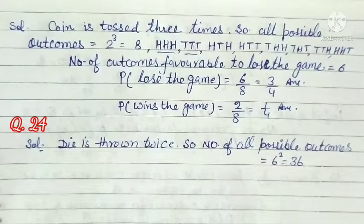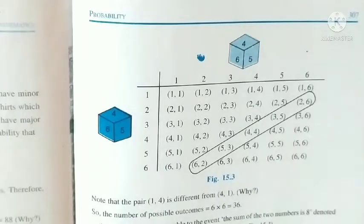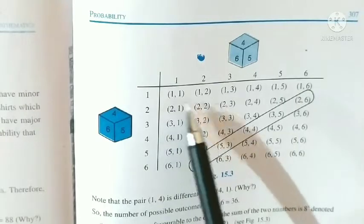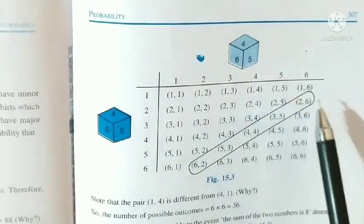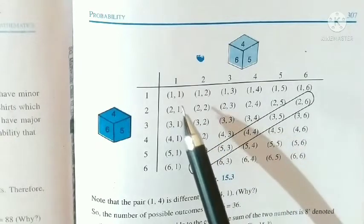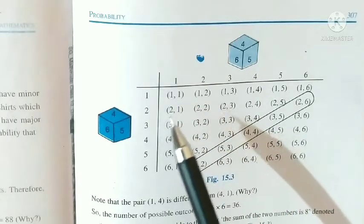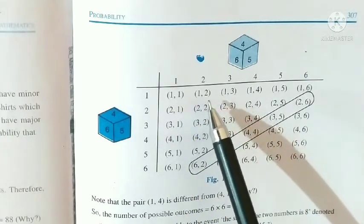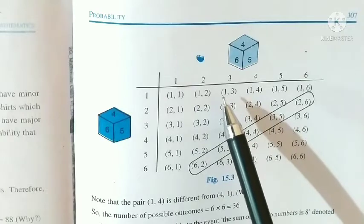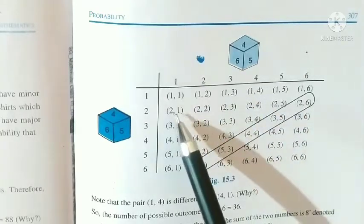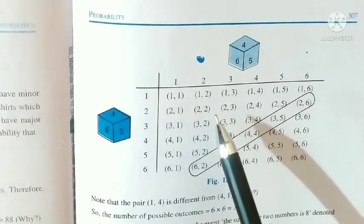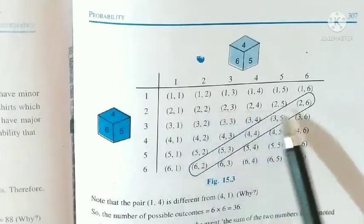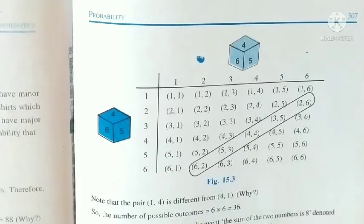The 36 total possible outcomes are: (1,1), (1,2), (1,3), (1,4), (1,5), (1,6), then (2,1), (2,2), and so on up to (6,6). Here (1,1) means the die showed 1 on the first throw and 1 on the second; (1,2) means 1 on first and 2 on second, and so forth.